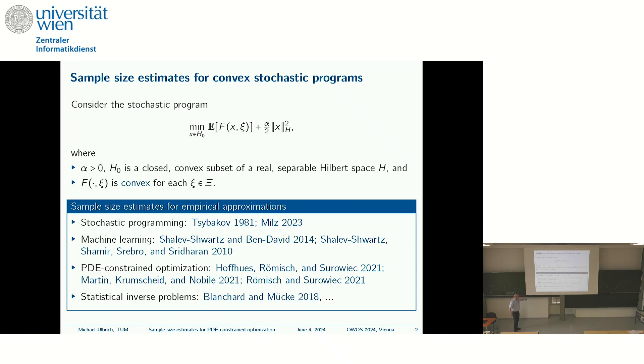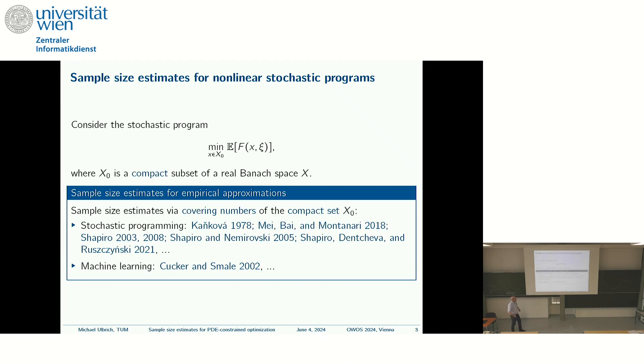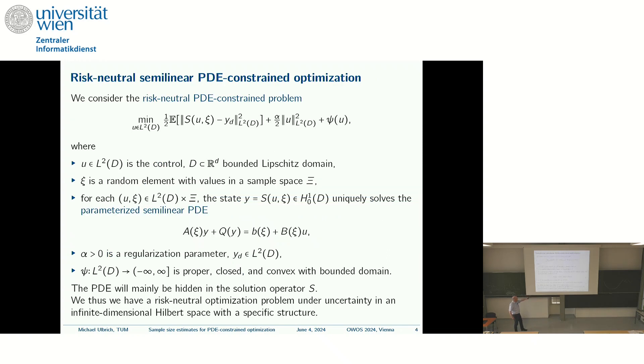Let me first go quickly through two slides on available results on sample size estimates. There is the convex world, where one has results. And there, one can use different techniques than we will use. For instance, one then can use monotonicity of the gradient to get estimates. But in our setting, we will be non-convex. And there, most of the available results are in finite dimensions. And the common scheme is that one assumes that the feasible set is compact. And we will not have this, but we will then get compactness from optimality conditions.